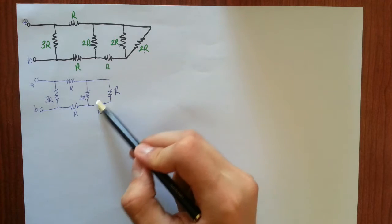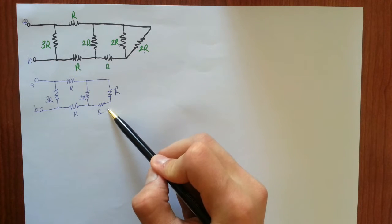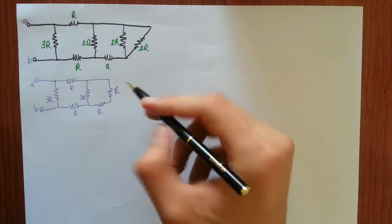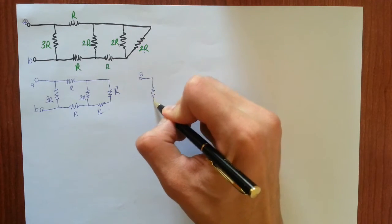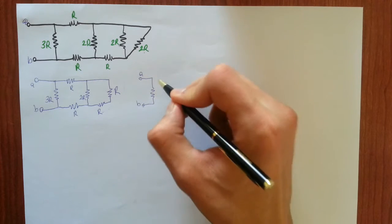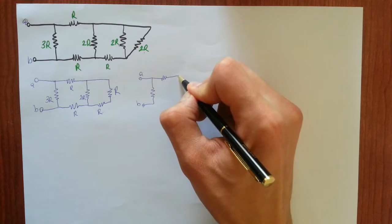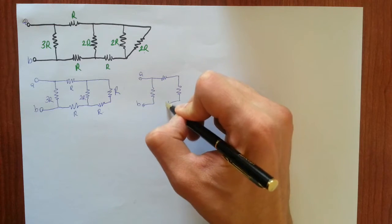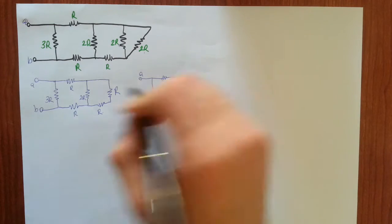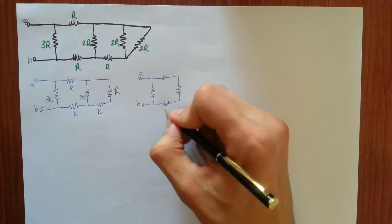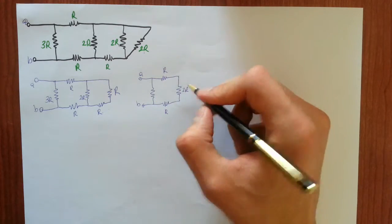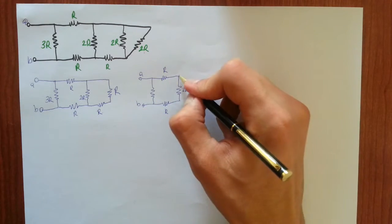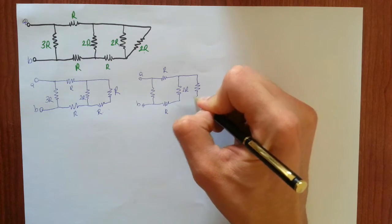As you see, these are in series with each other, so let's also reduce them into one single resistor. Terminal A, 3R, terminal B, R, 2R, R. And these two make 2R.